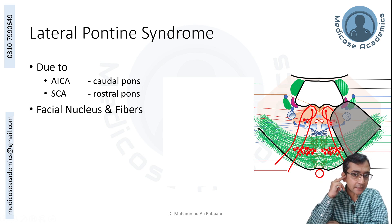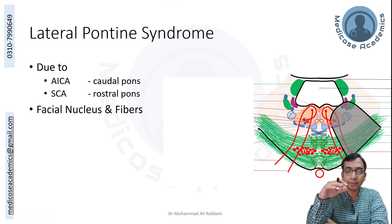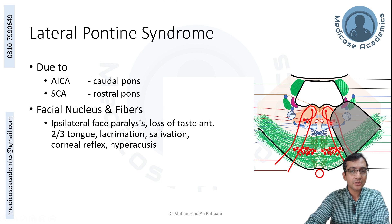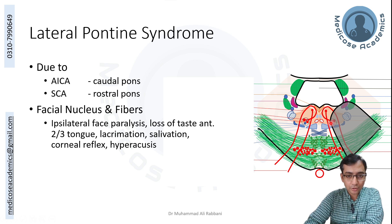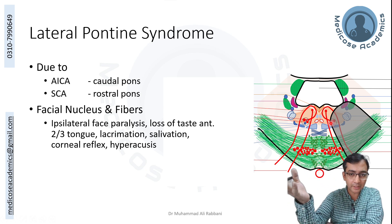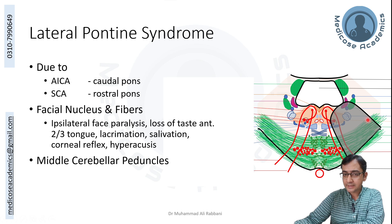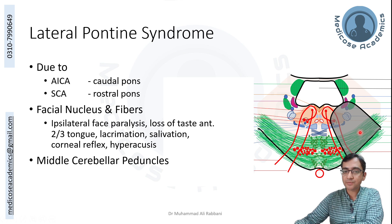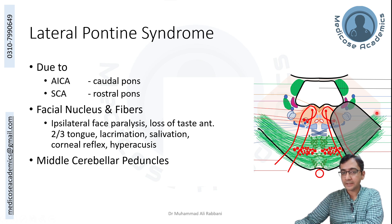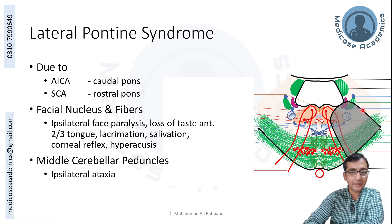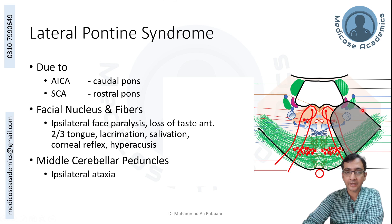The stapedius muscle in the ear dampens sound, so its loss leads to hyperacusis. These are all functions that are lost. The corneal reflex is also lost because the motor limb — the blinking component — is absent. The middle cerebellar peduncle is affected, as discussed in medial syndrome, carrying transpontine fibers to the cerebellum, so cerebellar features are evident: ipsilateral limb ataxia and gait abnormality.